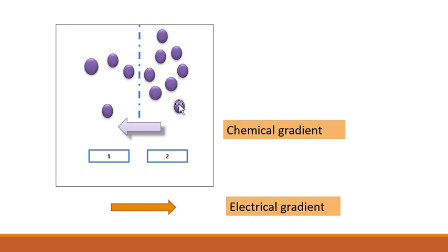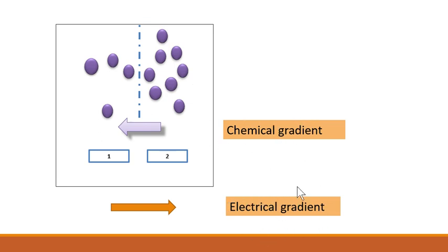Equilibrium potential of ion X is reached when the chemical gradient of X becomes equal to the electrical gradient of X. Whatever charge moves outward, the same opposing force is applied to resist further diffusion of that charge.